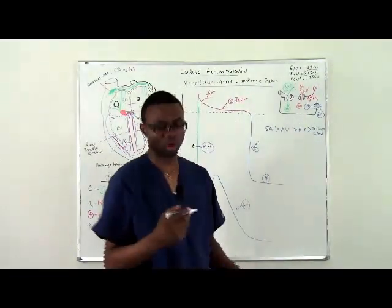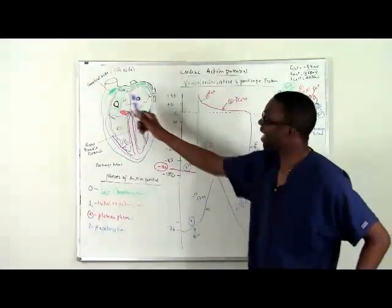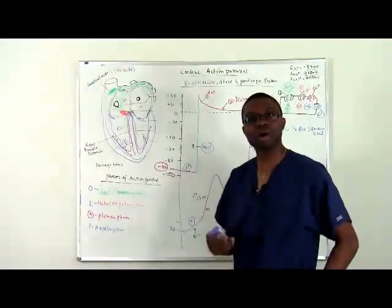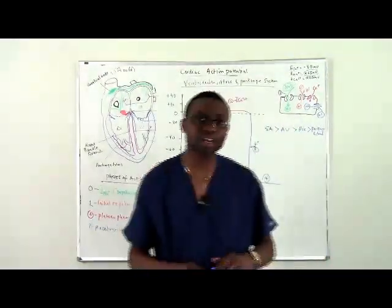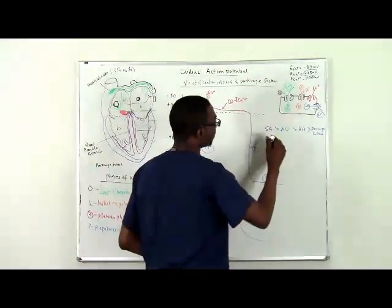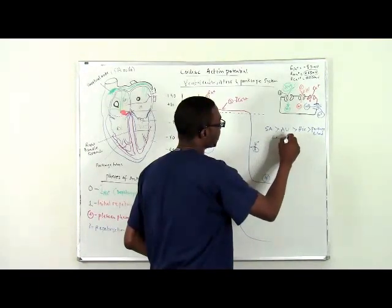Now why am I mentioning this? Because the SA node is what controls our heart rate. Our normal heart rate is between 60 to 100 beats per minute.